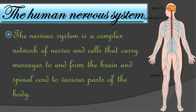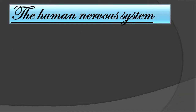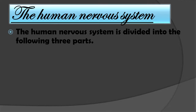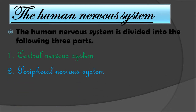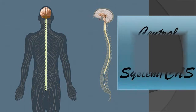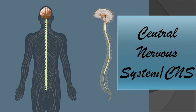The human nervous system is mainly divided into three parts: first is the Central Nervous System or CNS, second is the Peripheral Nervous System or PNS, and third is the Autonomic Nervous System. In today's video we shall study only about the Central Nervous System, also called CNS.